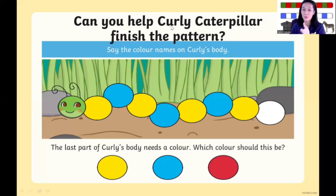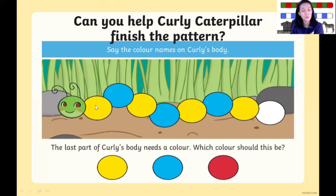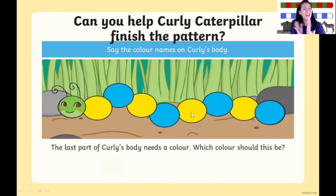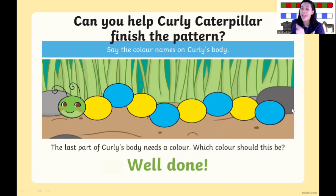Now it's time to call Mr. Caterpillar. Look at this caterpillar, children. Can you help Curly Caterpillar finish the pattern? Say the color names on Curly's body. Let's check the color from the left side. What color is it? Yellow, blue, yellow, blue, yellow. After yellow, the color is blue. Yellow, blue, yellow, blue, yellow, blue, yellow, and blue.